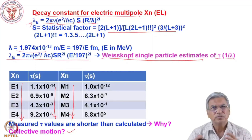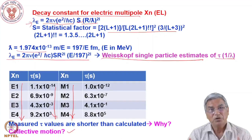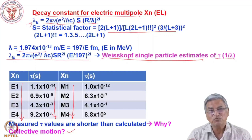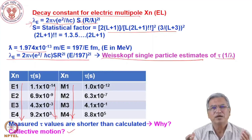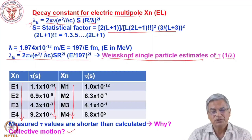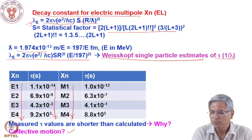The discrepancy between Weisskopf single-particle estimates and experimental half-lives led to the idea that the nucleus undergoes collective motion. Apart from individual nucleons moving in specified orbitals, the nucleus as a whole can undergo collective vibrations and rotations. This gives rise to collective states — vibrational states and rotational states — and one can calculate the moment of inertia of the nucleus using these excited states. This provides evidence for the collective model of the nucleus.